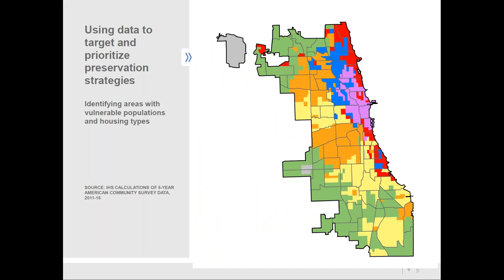That was really a lagging indicator — we were studying what had happened. A lot of our most recent work has really been trying to create a leading indicator to help facilitate more inclusive and equitable development through proactive policymaking to preserve affordable housing. The way we've done that is to create a framework to understand where in the city of Chicago we have this intersection of resident vulnerability to displacement — concentrations of low-income households, cost-burdened, renters, etc. — and housing market conditions associated with changing levels of affordability. I'm going to lead you through the development of this tool.